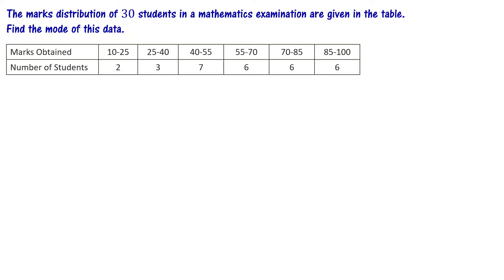The marks distribution of 30 students in a mathematics examination are given in the table. Find the mode of this data. This is grouped frequency distribution data of marks. The marks are divided into 6 classes: 10 to 25, 25 to 40, 40 to 55, and other classes, with number of students as the frequency for each class.